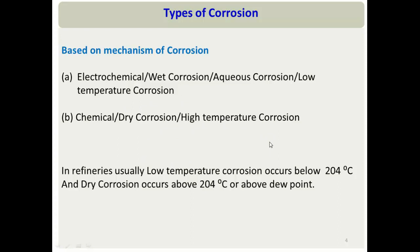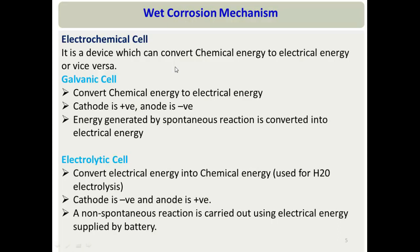Before jumping into electrochemical corrosion, let us briefly revise electrochemistry. An electrochemical cell is a device that converts chemical energy into electrical energy or vice versa. Based on this, it can be of two types: a galvanic cell, which converts chemical energy into electrical energy through a spontaneous chemical reaction...